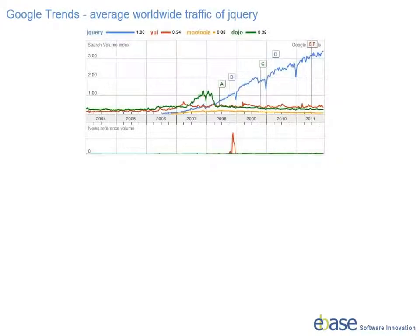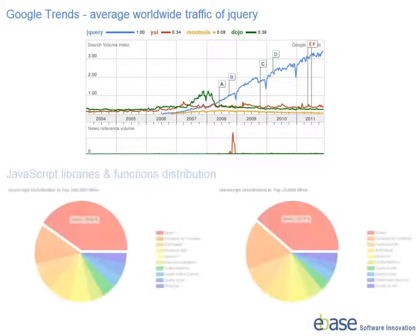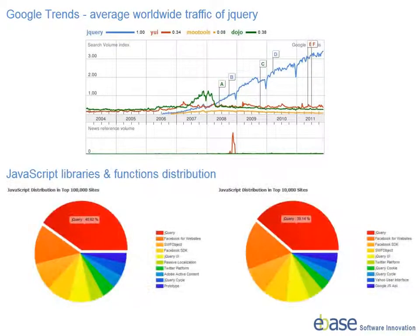Take a look at this Google Trends graph of the five most popular JavaScript libraries. It is apparent that jQuery has become the library of choice for web developers and is fast becoming the first choice for programmers looking to ease their client-side development and create rich internet applications quickly and efficiently.